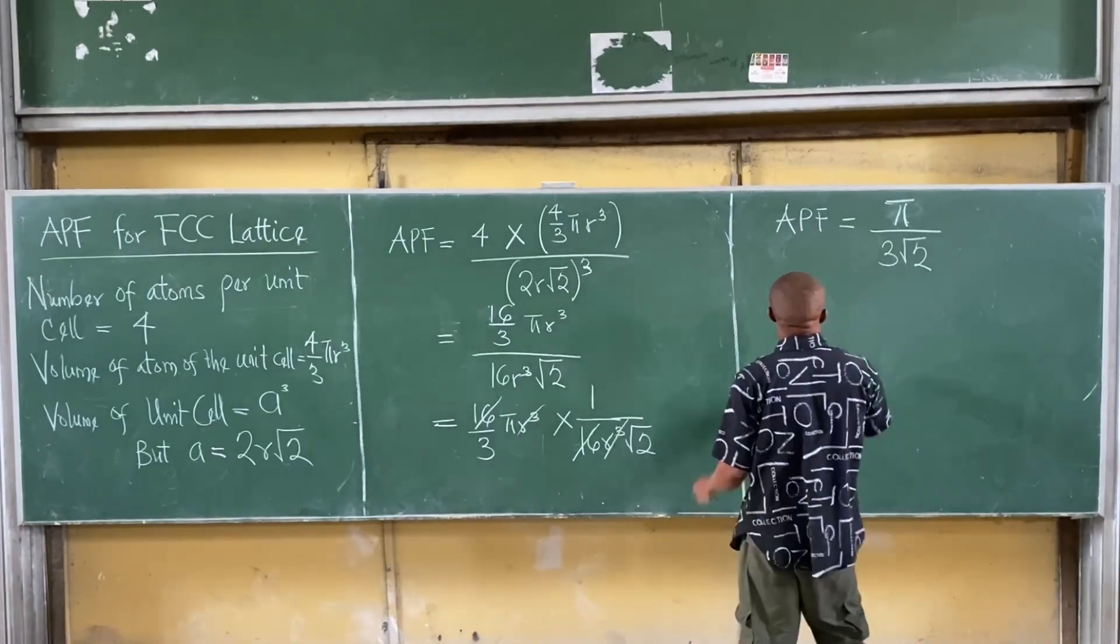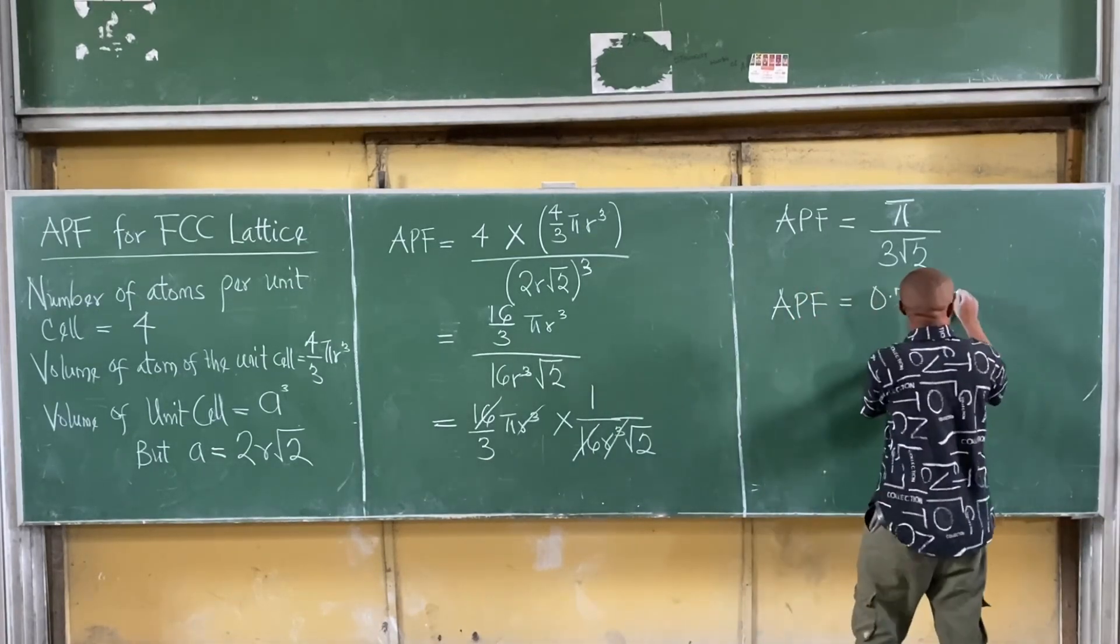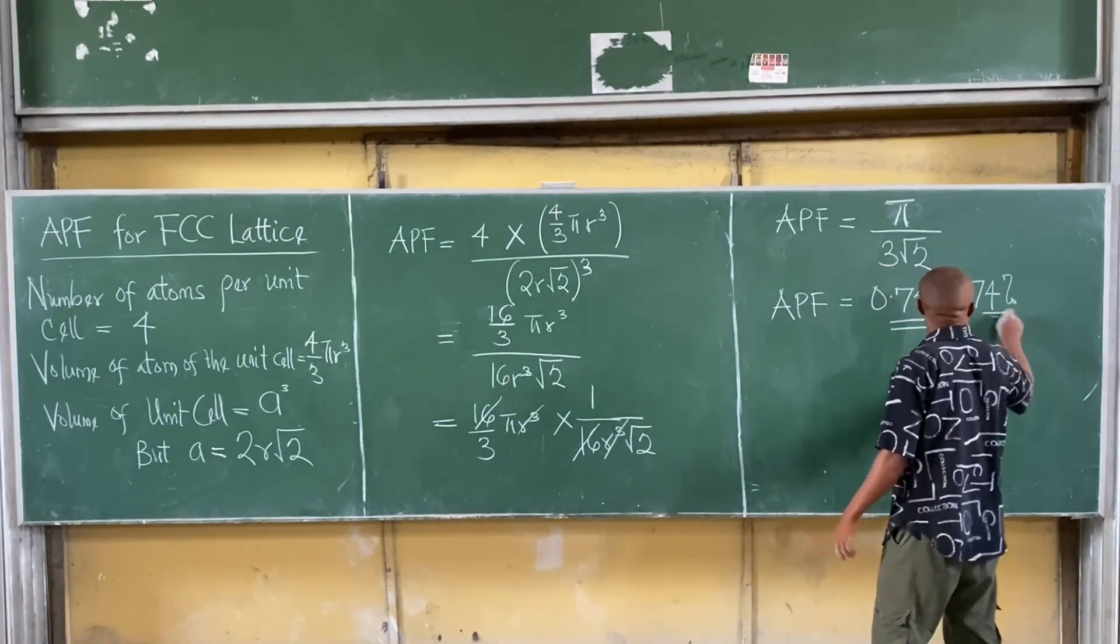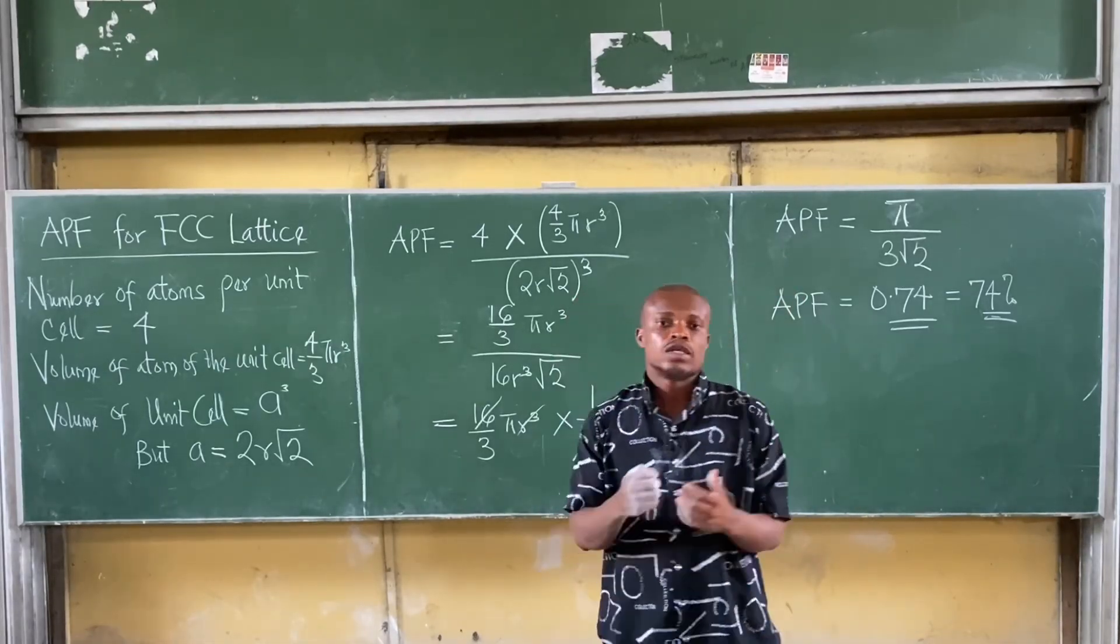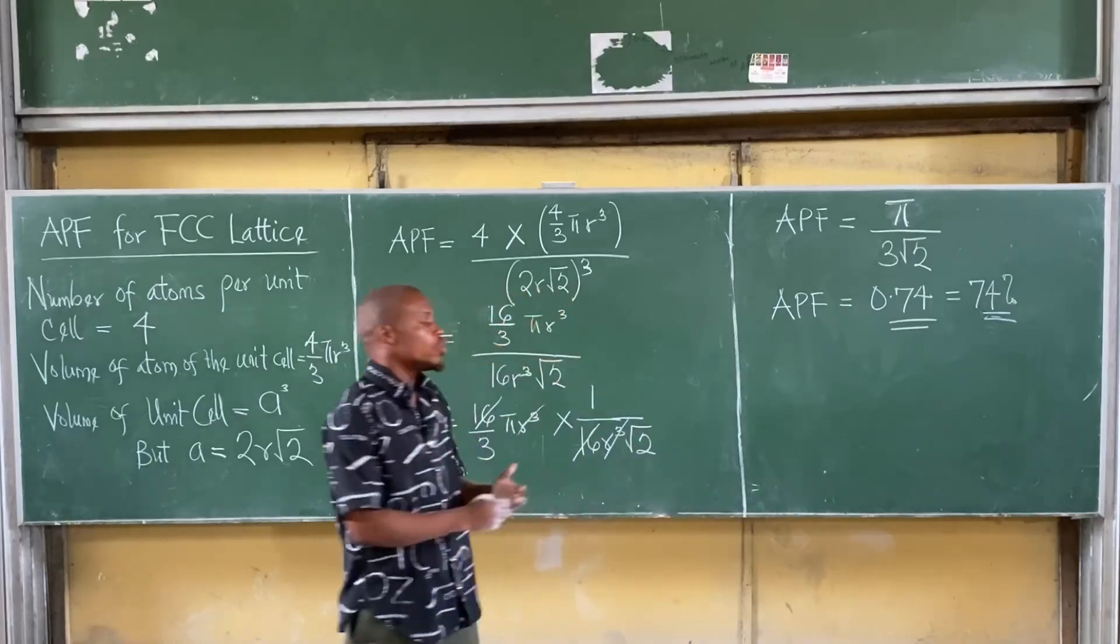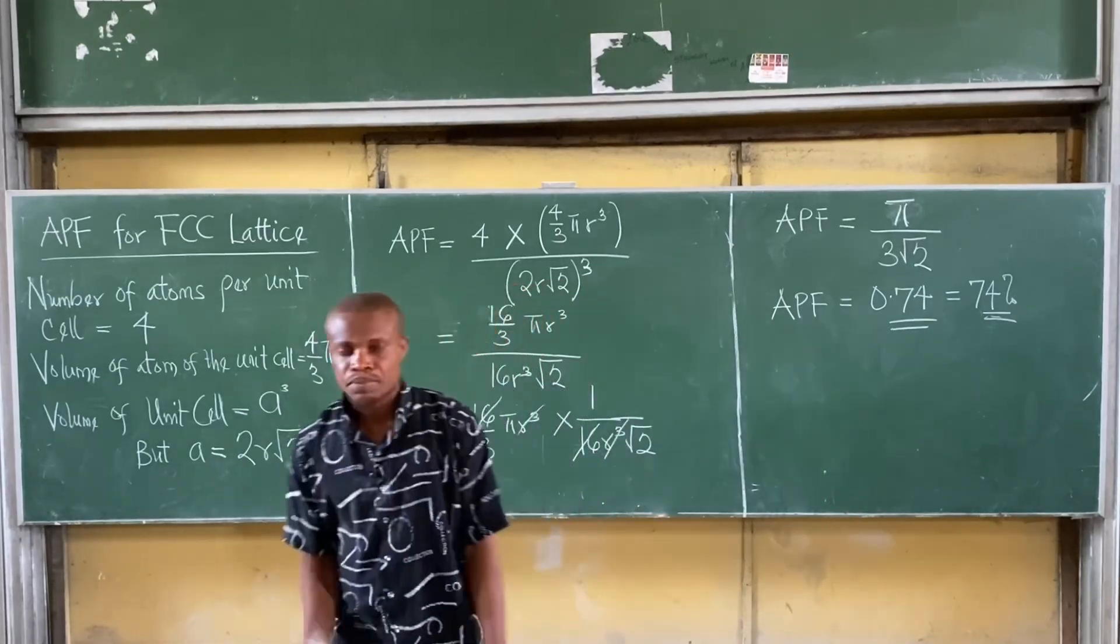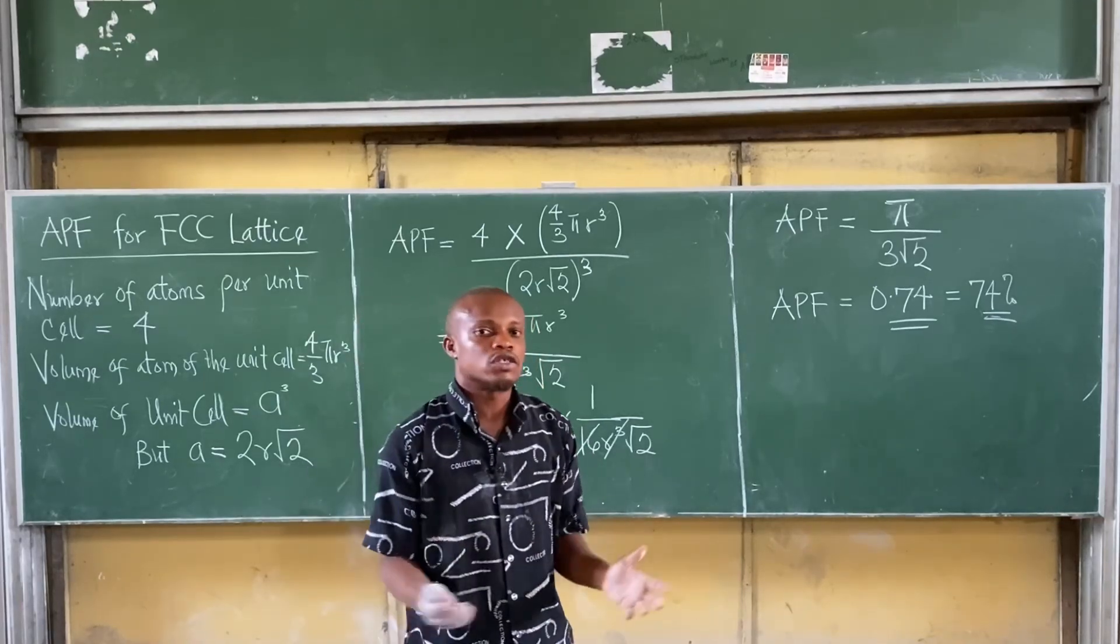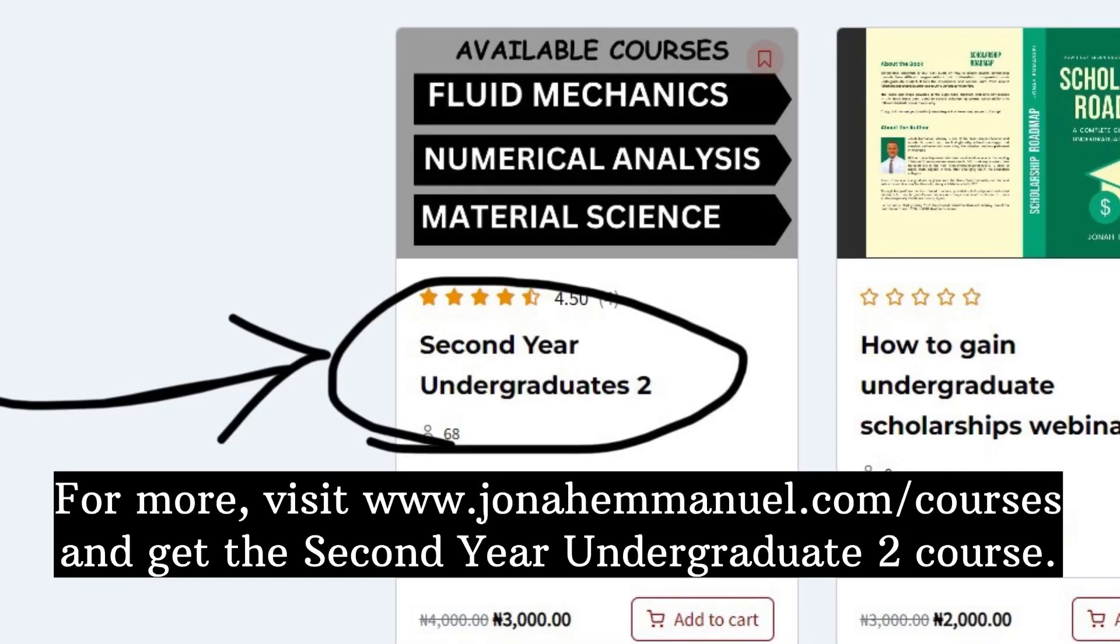Then, simplifying, we get that APF is equal to 0.74, which is the same thing as 74%. Therefore, for a FCC lattice, the atoms are closely packed to 74%. The remaining 26% are vacant or void.